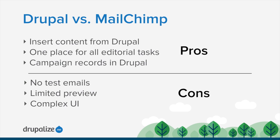Let's talk about pros and cons of sending MailChimp campaigns through the Drupal UI versus the MailChimp UI. Pros include the ability to insert content from within Drupal using that special token syntax — very powerful, especially when combined with custom view modes for email newsletters. I also like that it provides one place for all editorial tasks: you can teach your team Drupal and they never have to leave it. It also creates a campaign record within Drupal, so you can see a list of all sent campaigns and their statistics.